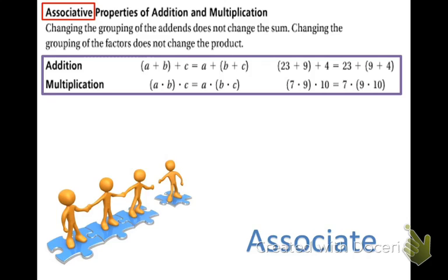And you can see at the very bottom there's a little picture of some little guys that are holding hands and they're in a group. Another word for associate is group together. People that work together are called associates. So you can think of this little picture when we are talking about the associative property. It's all about the grouping.